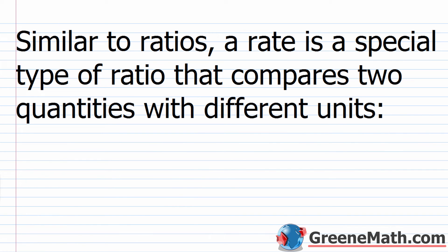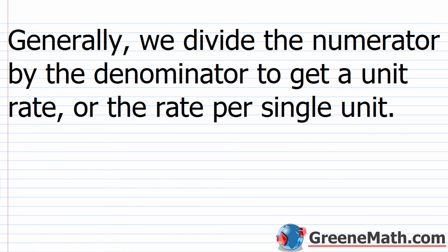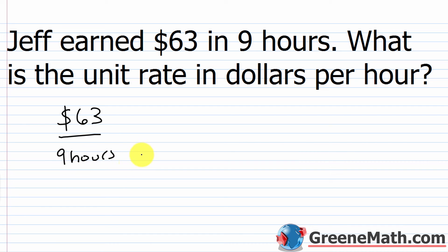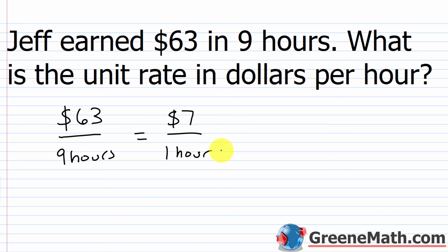Similar to ratios, a rate is a special type of ratio that compares two quantities with different units. When we talk about rates, we generally talk about the unit rate — the amount of something per one unit — which we find by dividing the numerator by the denominator. For example: Jeff earned $63 in nine hours. We set up $63 in the numerator and 9 hours in the denominator. 63 divided by 9 is 7, so the unit rate is $7 per hour.